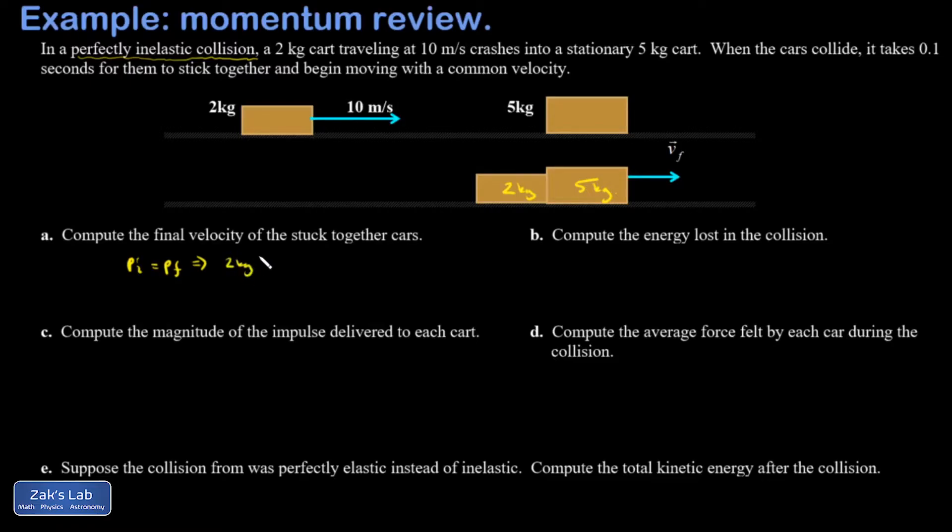That's 2 kilograms times 10 meters per second. And that's going to be equal to my final momentum, 7 kilograms moving together at an unknown final velocity. And so I obtain my final velocity, and I get 2.86 meters per second.